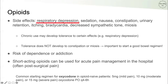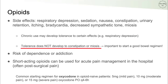One of the most dangerous side effects of opioids is respiratory depression. With chronic use, patients may develop tolerance to respiratory depression as doses increase. However, tolerance never develops to constipation and miosis — constipation worsens as the dose increases, which is why it's important to start a good bowel regimen for patients on opioids. There is also a risk of dependence or addiction to opioids.